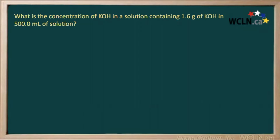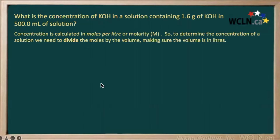The question wants us to find the concentration of KOH, which is potassium hydroxide, in a solution containing 1.6 grams of potassium hydroxide in a 500 mL solution. To calculate this concentration or molarity, we need to know the number of moles we have per liter.